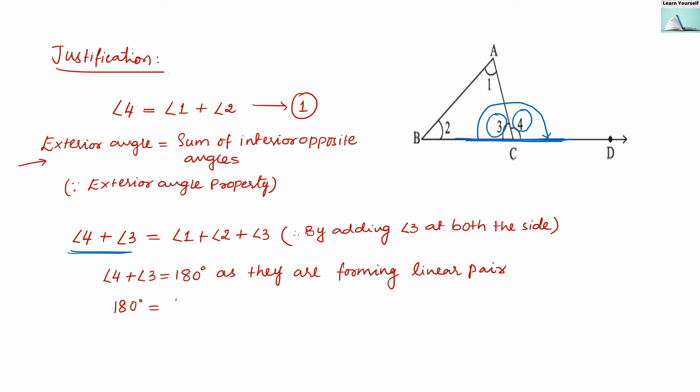So 180 degrees equals angle 1 plus angle 2 plus angle 3. We have proved that angle 1, angle 2, and angle 3's sum is 180 degrees. Therefore, the sum of all three angles of a triangle is equal to 180 degrees.